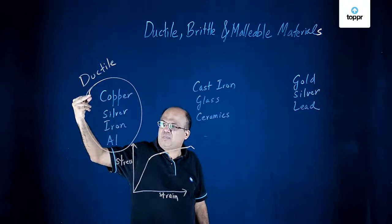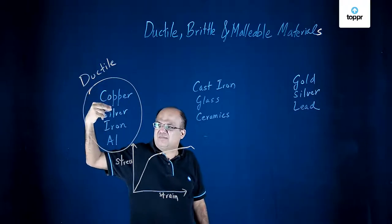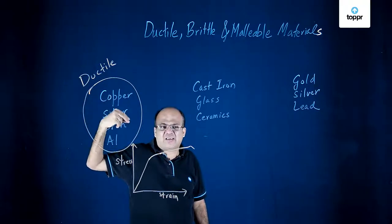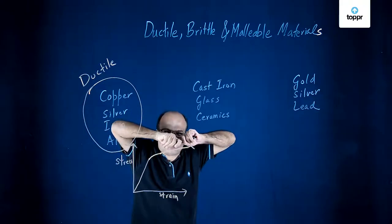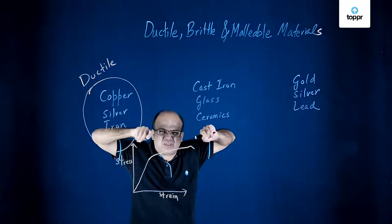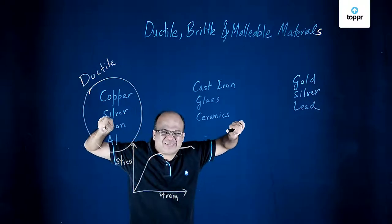Examples of ductile materials are copper, silver, iron, and aluminium. You can draw them into thin wires.